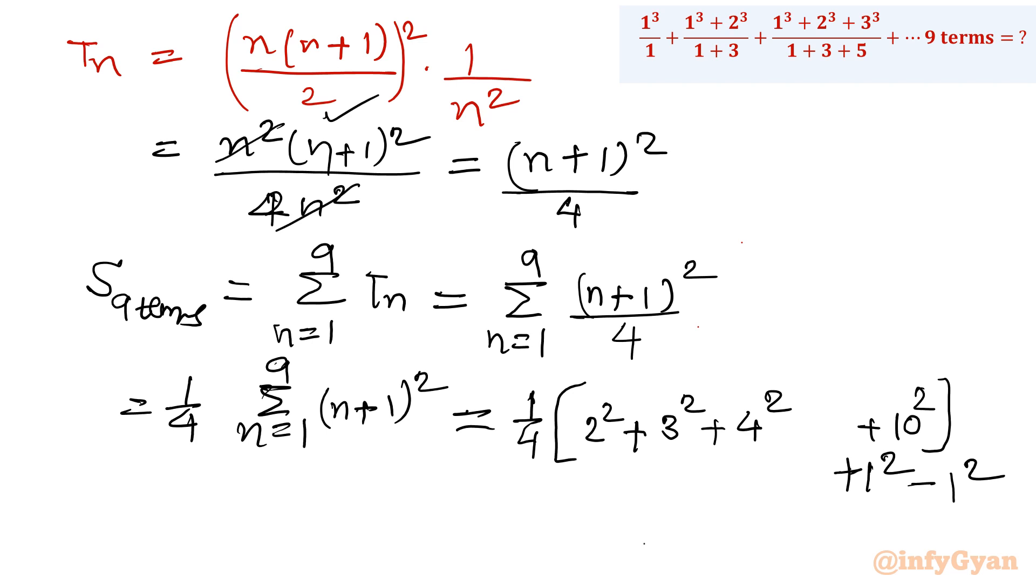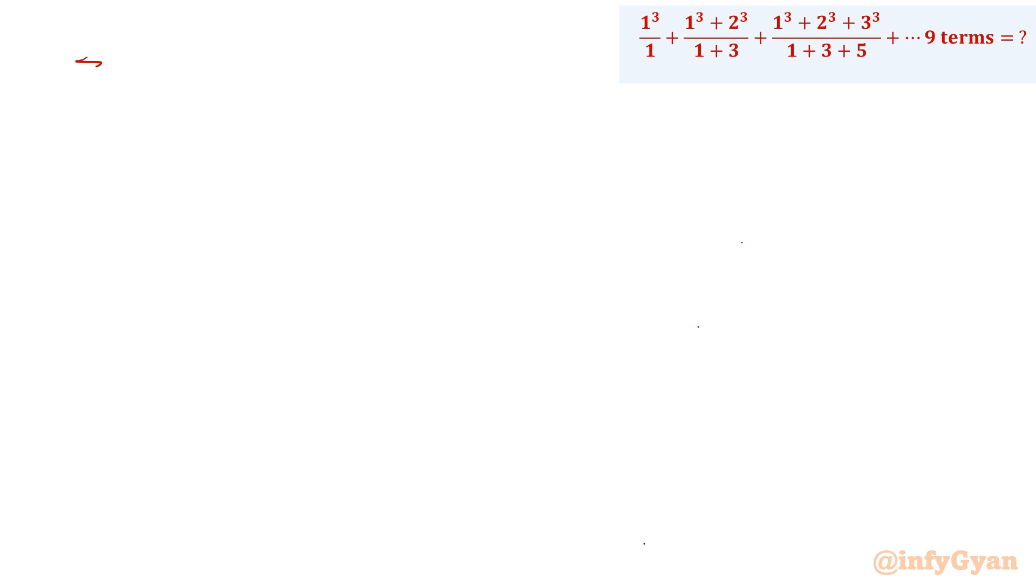See what will be the effect of that. I will have 1 over 4 in bracket. This one I will include in this sequence. So 1 square plus 2 square up to 10 square minus, minus 1 square is 1, and 1 by 4 is there outside. Now it is the sum of all squares from 1 to 10. So let me write here 1 over 4, I will write the sum of all squares up to 10 square minus 1.